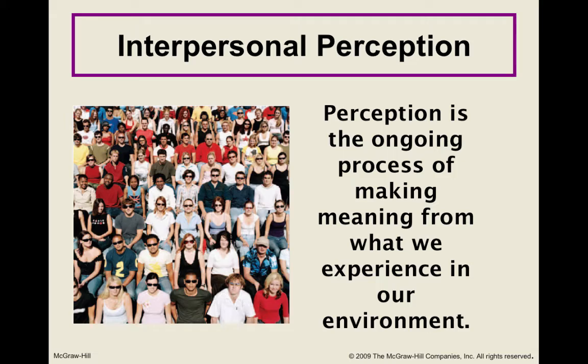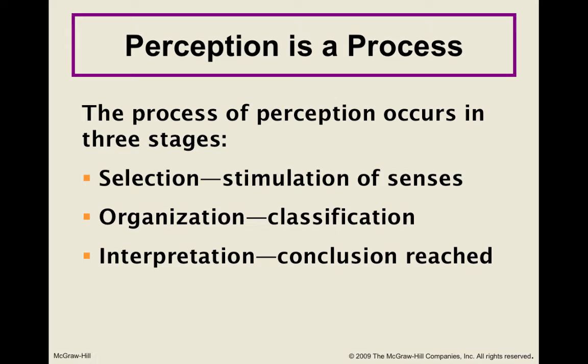There are three stages in the perception process. These things happen so quickly that we're usually unaware of them, but today we're going to break perception down into three stages: selection, which is where your brain decides what to pay attention to; organization, where it classifies that information; and interpretation, where, based on all those things, it reaches some kind of conclusion.